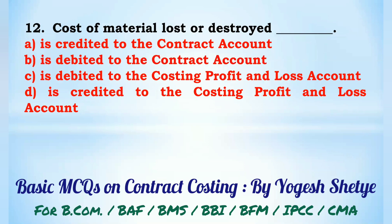Question 12: Cost of material lost or destroyed — (A) is credited to the contract account, (B) is debited to the contract account, (C) is debited to the costing profit and loss account, (D) is credited to the costing profit and loss account. Cost of material lost or destroyed is credited to the contract account. Answer: A.